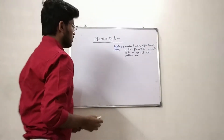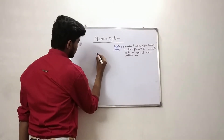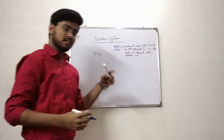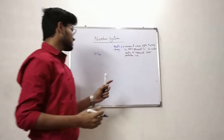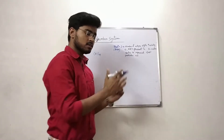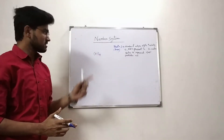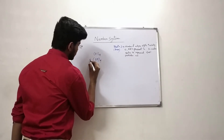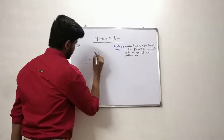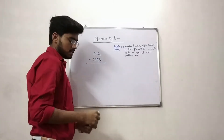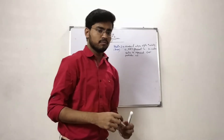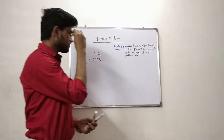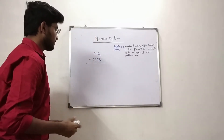Suppose we have two numbers: 21 whose base is 4, and 25 whose base is also 4. That means the number of unique digits present in the number system to represent that particular number system is equal to 4. We have to add these two numbers of base 4. We have to remember a particular formula to perform any type of radix addition operation.